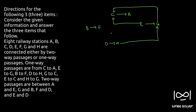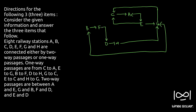Two-way passages are represented by arrows on both ends. These are between A and E, G and B, F and D, and E and D. So we have now marked all our passages.